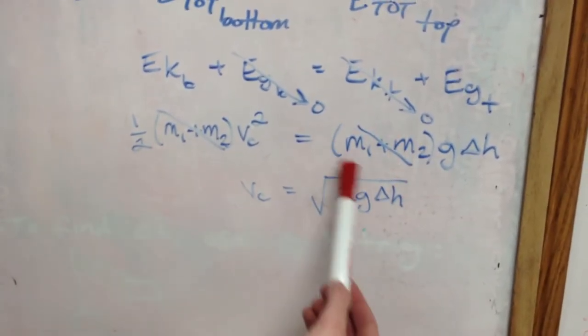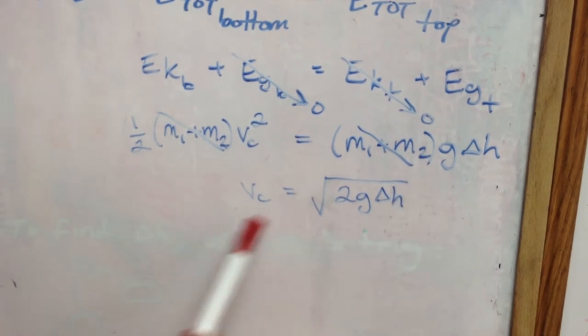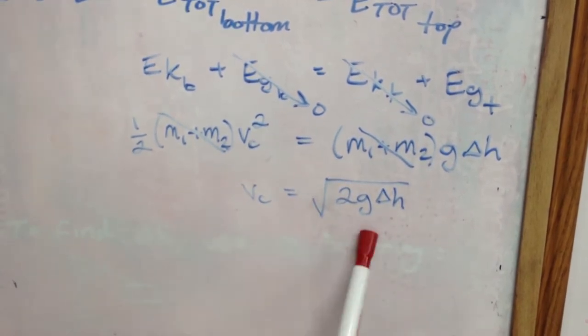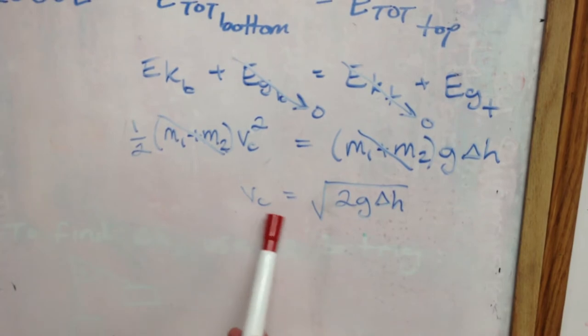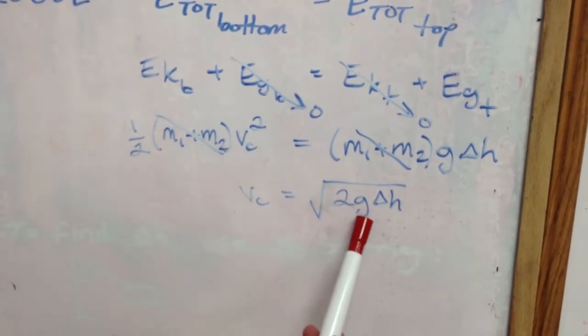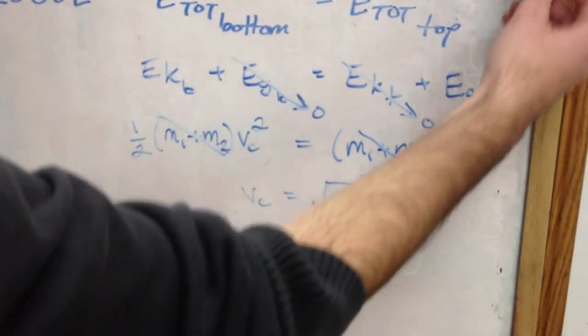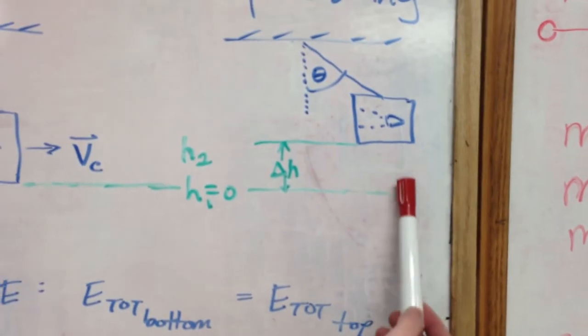You have combined mass on both sides, so those terms cancel. Eventually you're left with this term where the velocity of the combined mass is equal to the square root of 2 times gravity times whatever this height is.